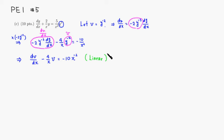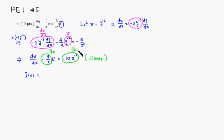We can solve this using the integrating factor. The integrating factor I(x) is found by e to the integral of P(x) dx, where P(x) is negative 4 over x, and Q(x) is negative 10 x^(-2).